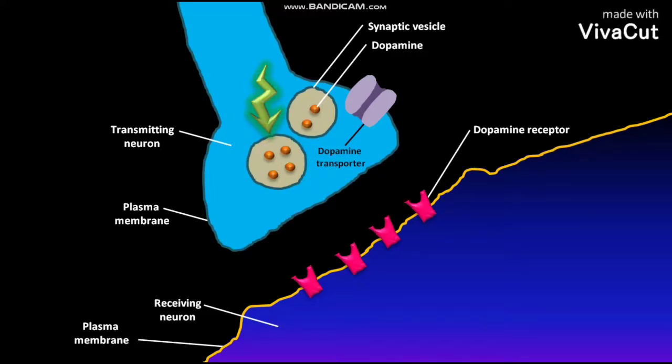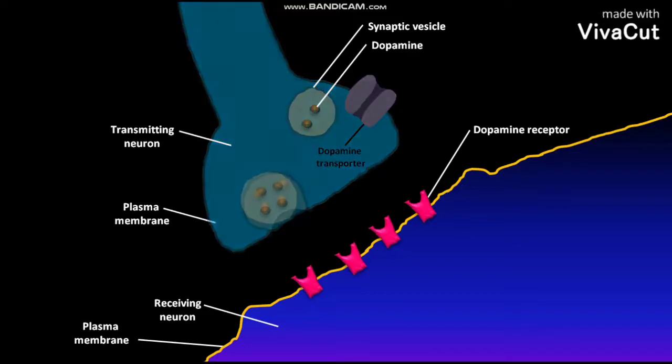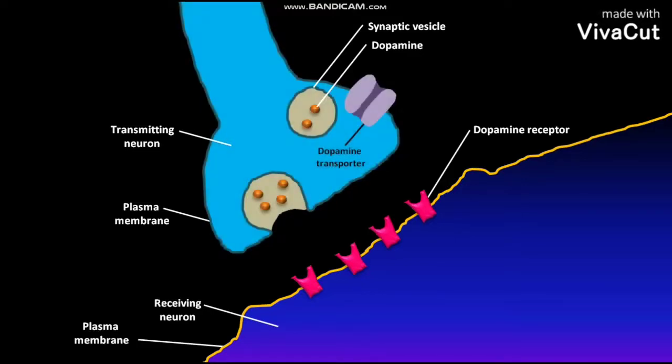the synaptic vesicle containing dopamine moves towards the plasma membrane of the transmitting neuron and fuses with it. Due to this vesicular fusion, the dopamines are released into the synaptic region. These dopamines then bind to the dopamine receptors on the plasma membrane of the receiving neuron.